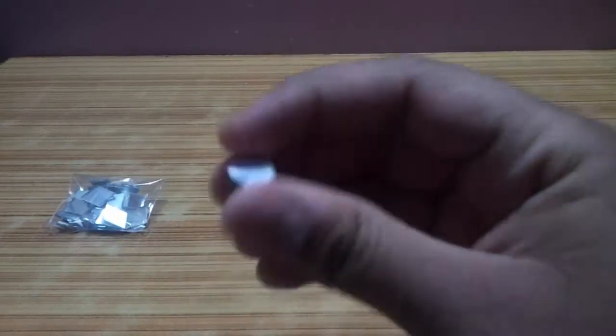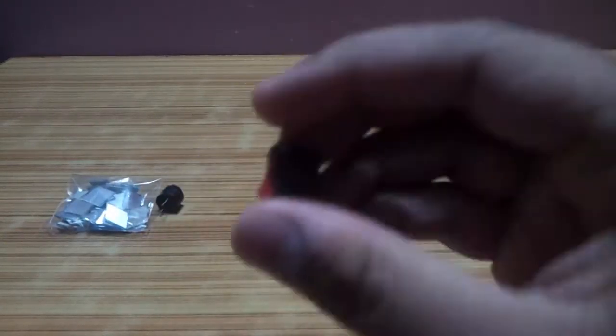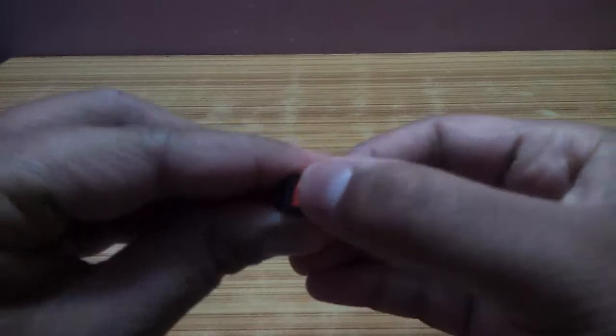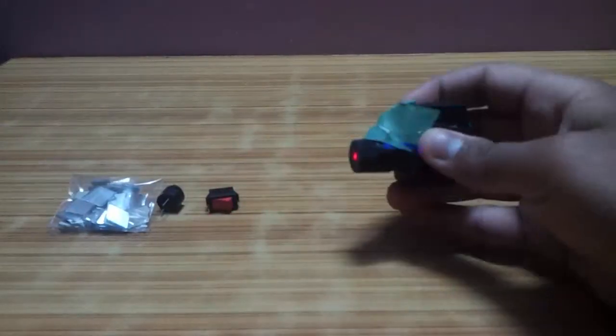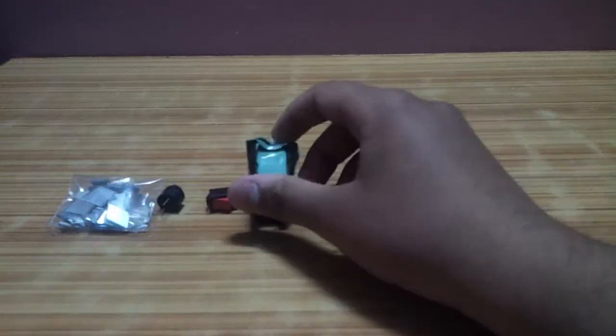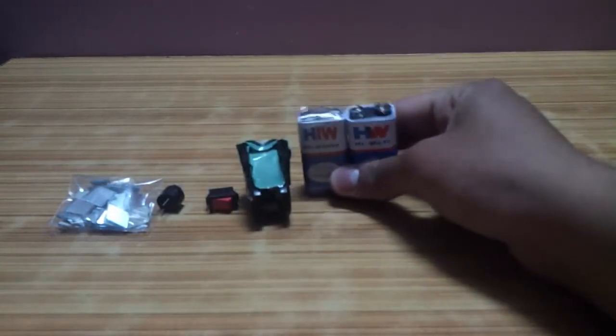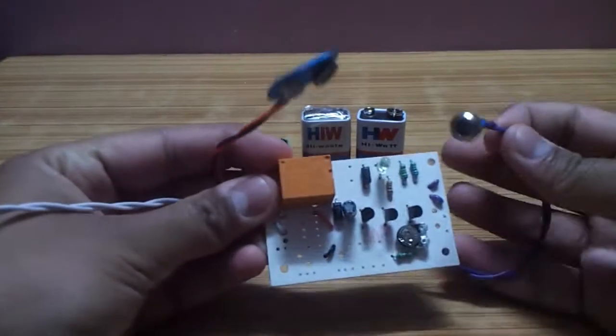First we need some craft mirrors, a buzzer or a siren, a small switch, a laser pointer, two batteries and a LDR circuit board.